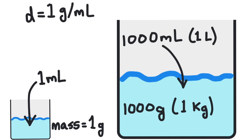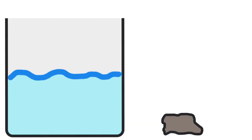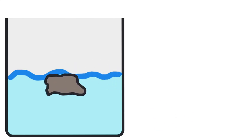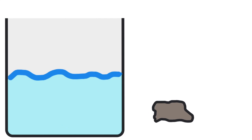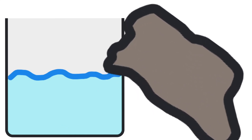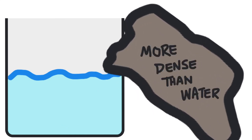If an object is more dense than water it will sink, like a rock. A rock is more dense than water and it sinks. Remember that one liter of water has a mass of one kilogram. If you had a rock that took up the same amount of space as one liter of water, it's going to be much more massive — it weighs more even though it's taking up the same amount of space. That's what density is.